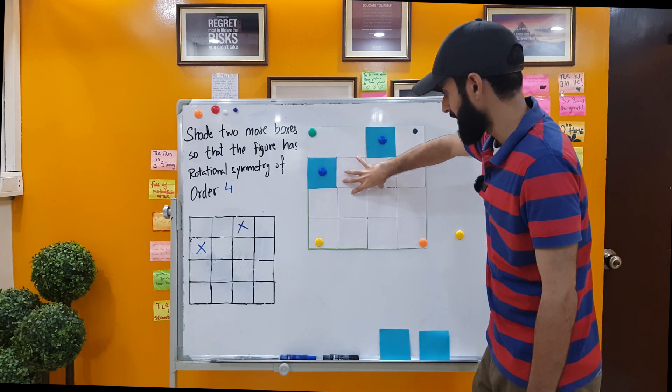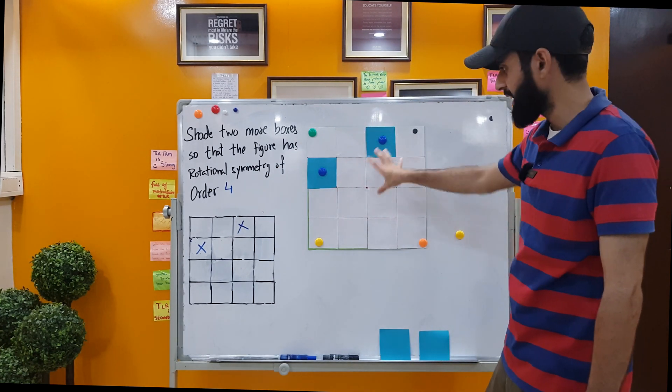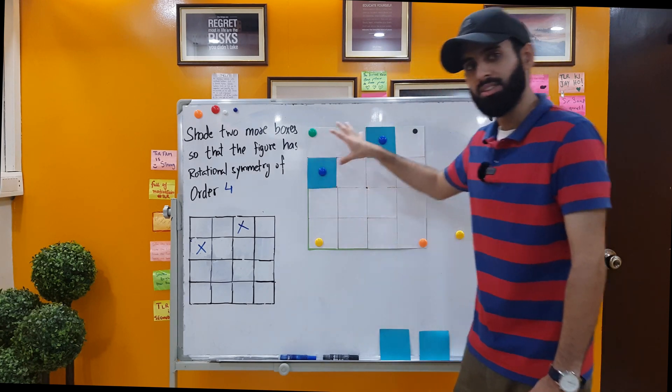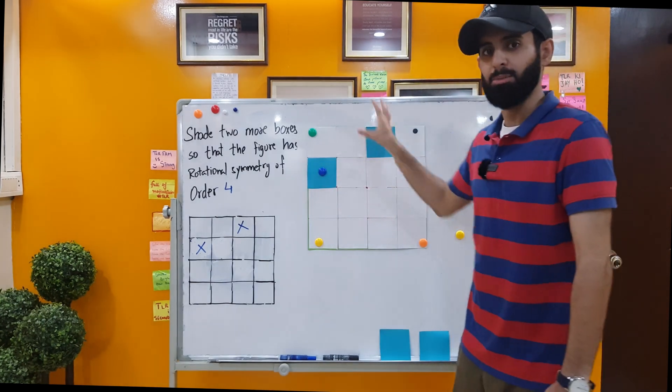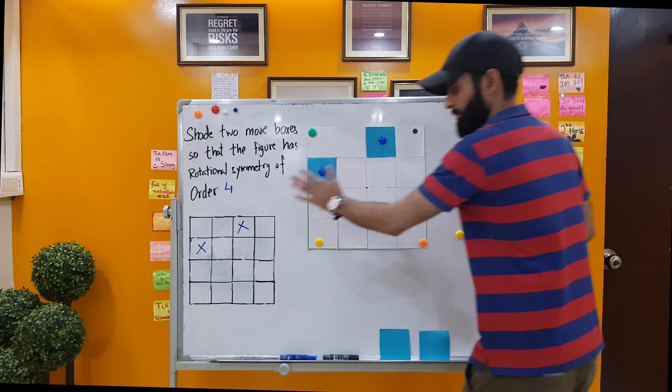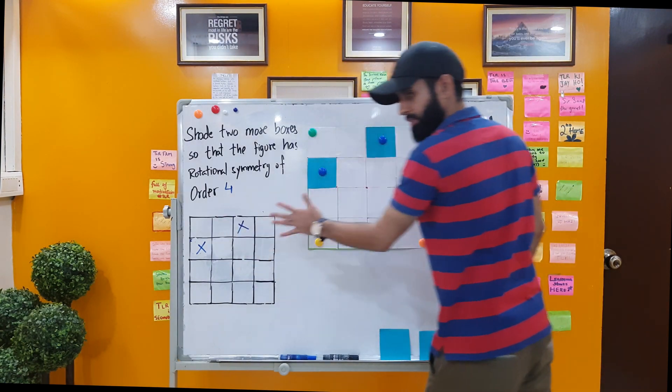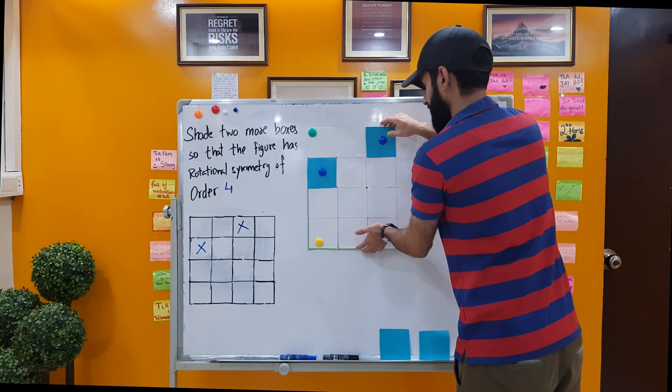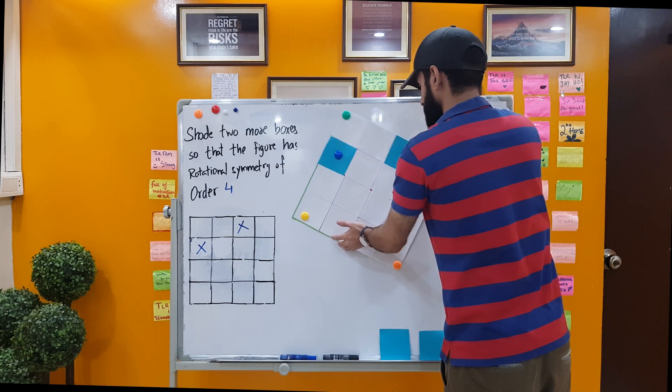So what I'm going to do is, again I've replicated the whole thing here. I'm going to rotate this 90 degrees and then whatever box loses its place or goes unshaded I'm going to be shading that box. I'm going to be constantly comparing it with the original figure. So let's start rotating it.